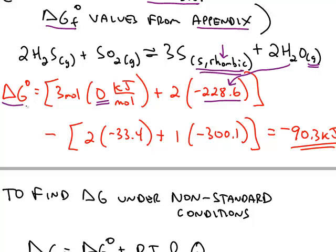This calculation gives me a negative delta G. So under standard conditions, this reaction is spontaneous if we're at the standard conditions of temperature and pressure.